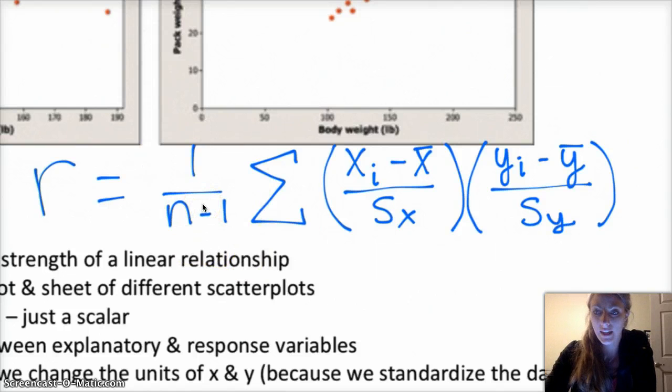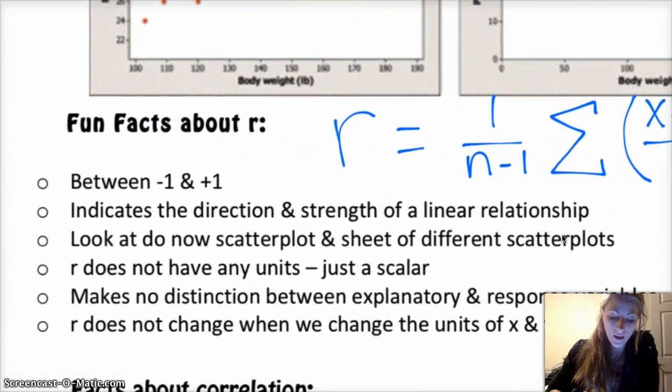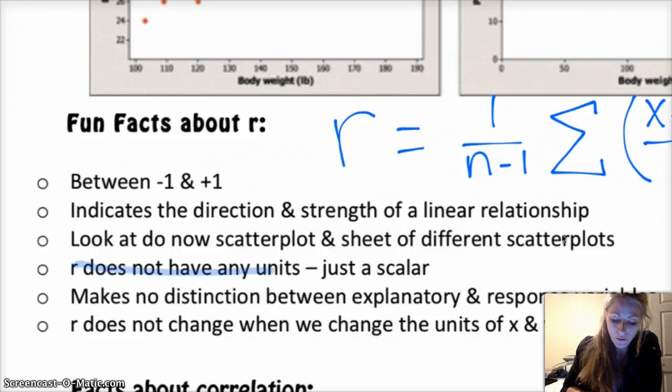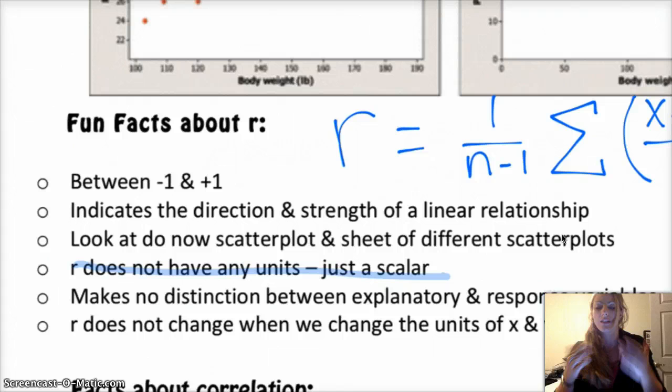You do 1 over n minus 1 where n is the number of observations, the number of dots on your scatterplot, and then times the sum of each individual x value minus its mean divided by the standard deviation of the x's times each individual y value minus the y mean divided by the standard deviation of y. And so a couple things come from this. One is that you are taking the units of x and dividing it by the units of x, and the units of y divided by the units of y. And therefore, it will have no units. It's just a scalar because you're canceling out your units.